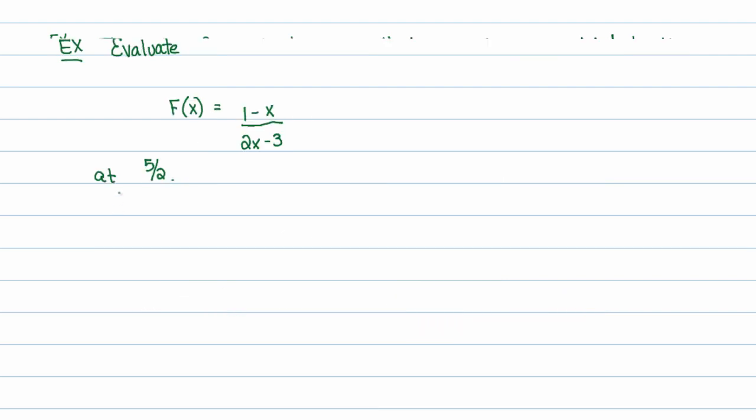Now, as a simple example, we'll just evaluate F of X is equal to 1 minus X divided by 2X minus 3 at 5 halves. I'm trying to throw at you all the different terms that we use for evaluating functions. Sometimes we just say, what's F of 5 halves? Sometimes we ask you to evaluate F at 5 halves or interpret what F of 5 halves means. Find the value of F of 5 halves. They all mean the same thing. This just basically means replace the input with 5 halves. So you get this: 1 minus 5 halves all over 2 times 5 halves minus 3.